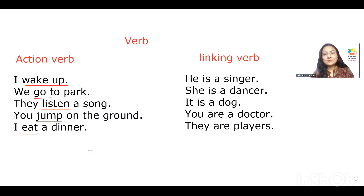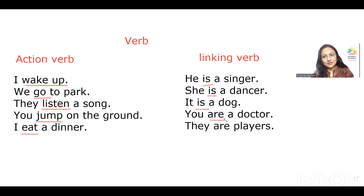Now, a linking verb tells about what the subject is. So here we can see: He is a singer — is is the verb. She is a dancer — is is the verb. It is a dog — is is the verb. You are a doctor — are is the verb. And they are players — are is the verb.